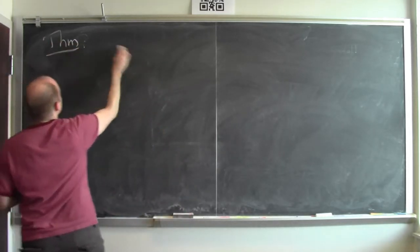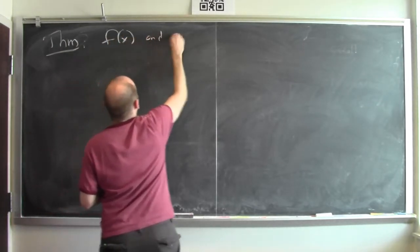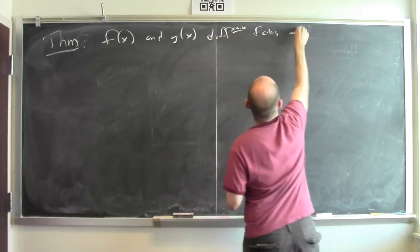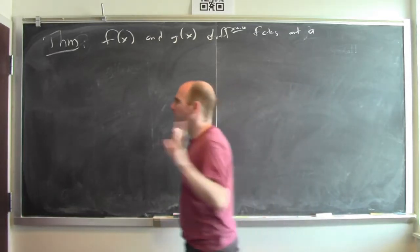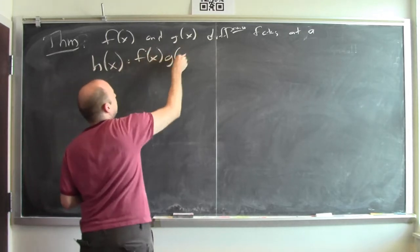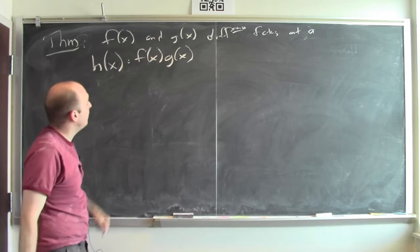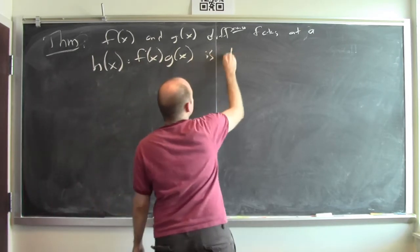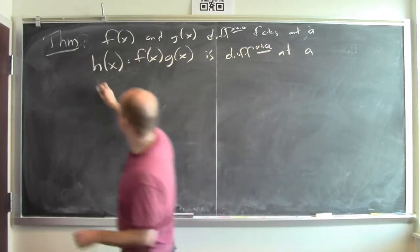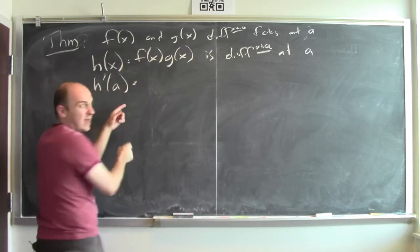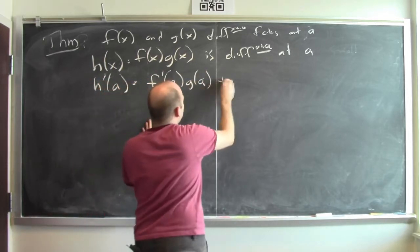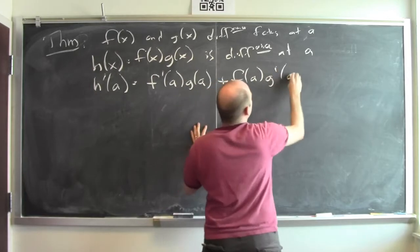Theorem. Suppose that f and g are differentiable functions at a. I'm going to define a new function h which will be the product of f and g, so h is f times g of x. Then h is also differentiable at a, and the derivative of h at a is f prime of a times g of a, plus f of a times g prime of a.